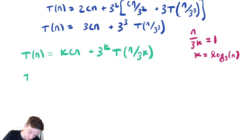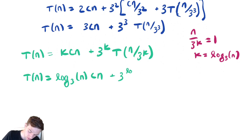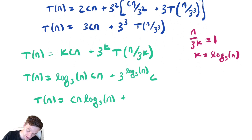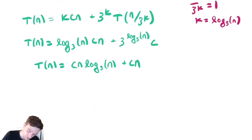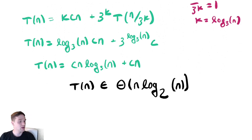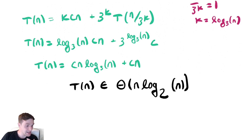Using that fact, we have t of n equal to — plugging in k — log base three of n times cn, plus three to the log base three of n times t of one. Since t of one is just c, we simplify to cn log base three of n plus n times c, meaning t of n is in Theta of n log base three of n. Importantly, this is the same asymptotic complexity as log base two — we gain no additional efficiency by dividing the array into thirds instead of dividing it in half.